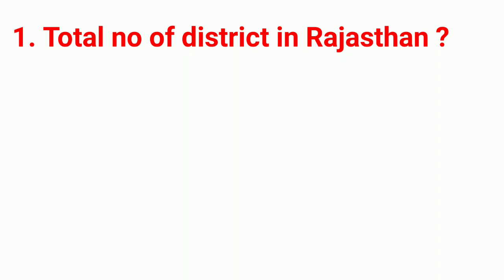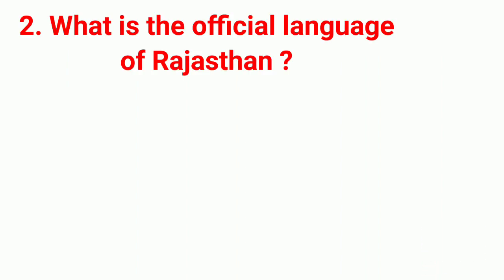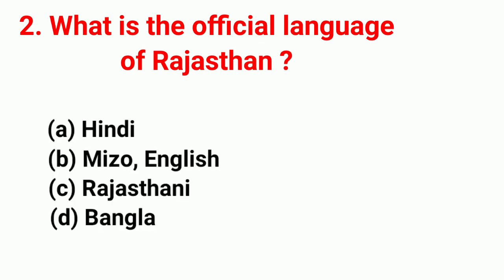Total number of districts in Rajasthan? Right answer is 33. What is the official language of Rajasthan? Right answer is Hindi.